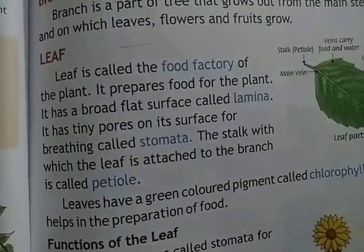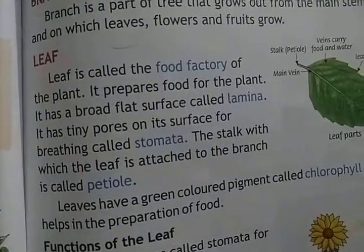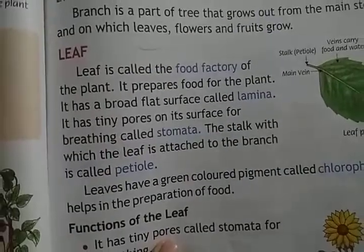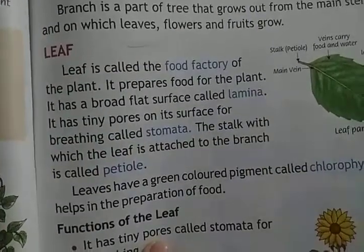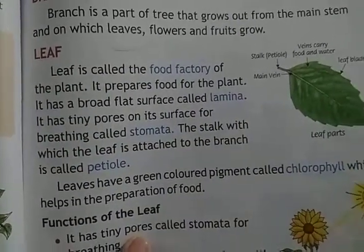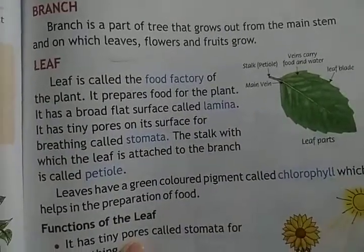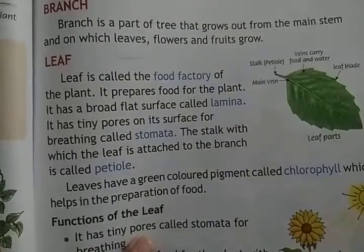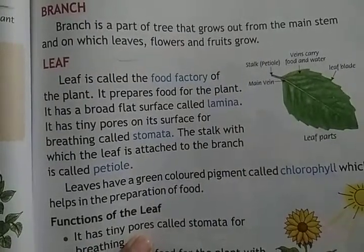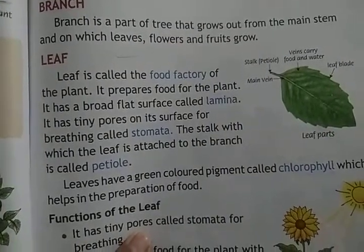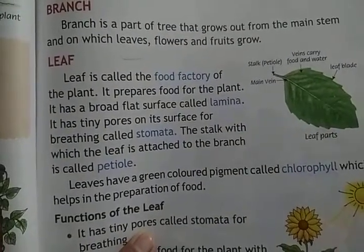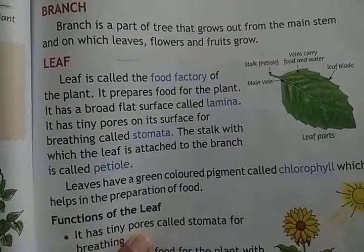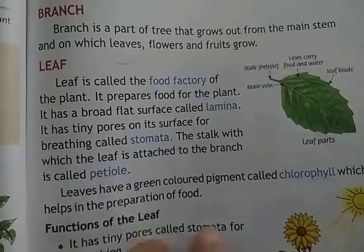Leaf is called the food factory of the plant. It prepares food for the plant. It has a broad flat surface called lamina. It has tiny pores on its surface for breathing called stomata. The stalk with which the leaf is attached to the branch is called the petiole.